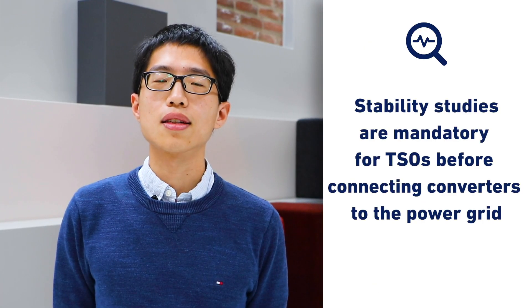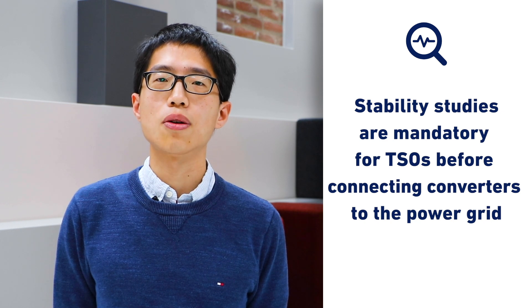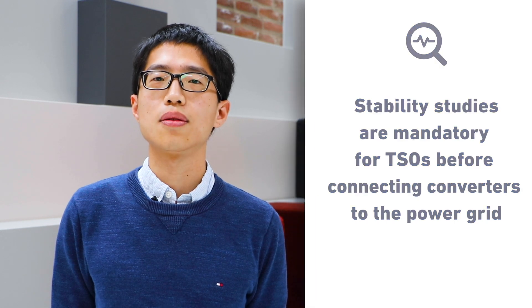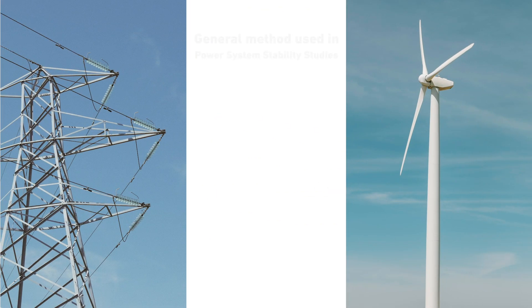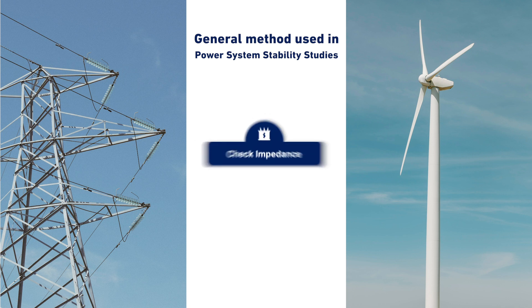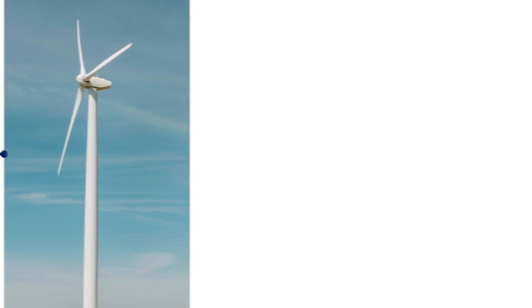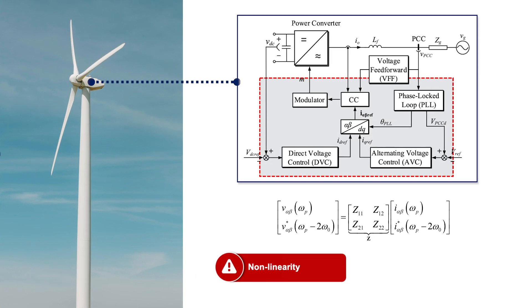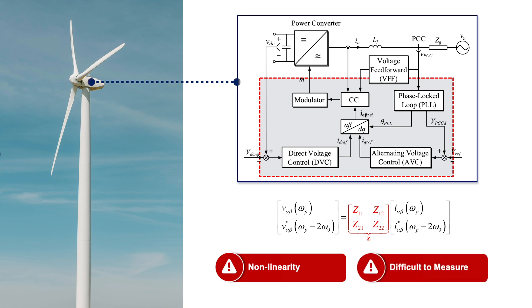To tackle this challenge, stability studies are mandatory for TSOs before allowing power converters to physically connect to the power grid. Generally, power system stability studies are carried out by checking the output impedance of power converters. However, due to the non-linearity of the converter control, its impedance will have a matrix form, which is quite difficult to measure.